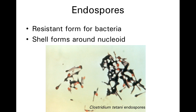They form a very distinctive-looking shape that's often described as a tennis racket in appearance. You can see the endospore forming around the nuclei, and this is the rest of the bacillus. So diagnosticians could look under a microscope and see this and know that they had isolated this particular bacterium.